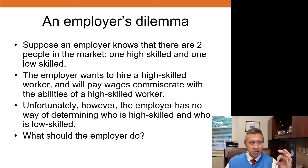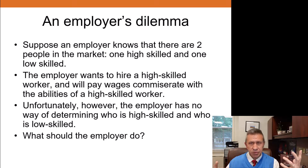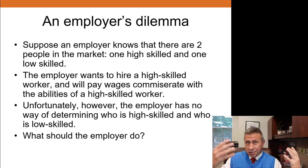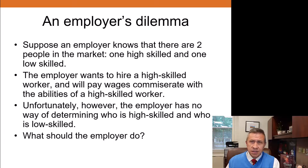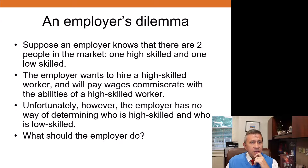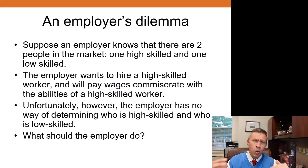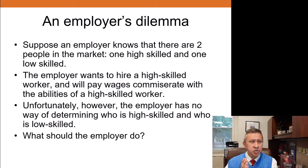So we're going to start with an employer's dilemma. Suppose an employer knows there are two types of people in the job market — to simplify, just two: high-skilled and low-skilled. Of course the employer wants to hire the higher-skilled worker and could pay wages commensurate with that person's ability, but doesn't know ahead of time whether the person they'd hire is really high-skill or low-skill. What can the employer do to get a better idea of who they might be hiring?